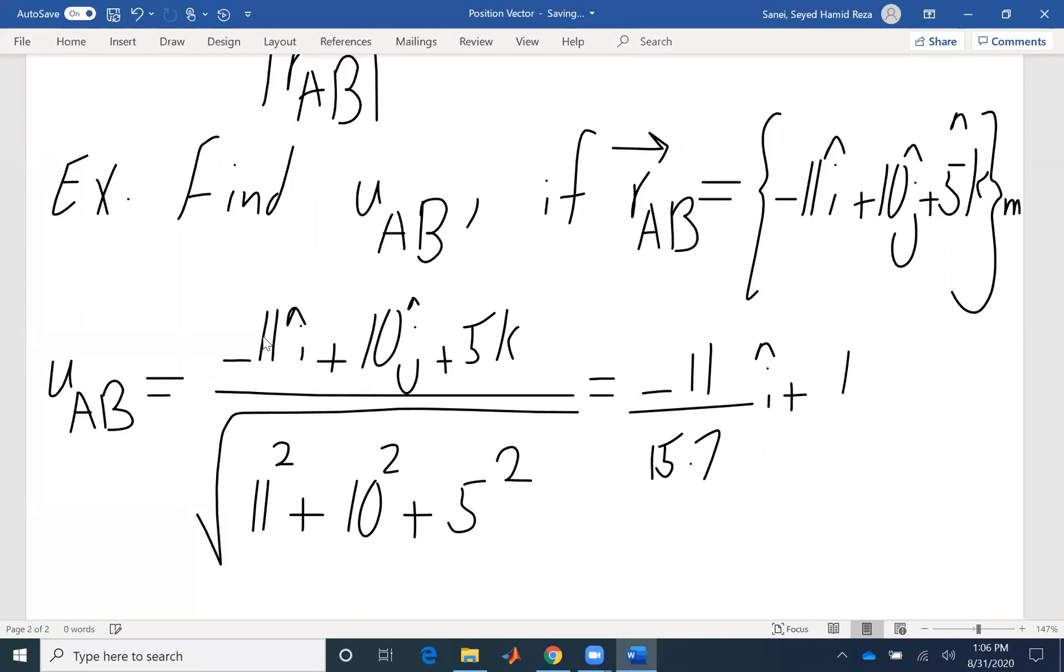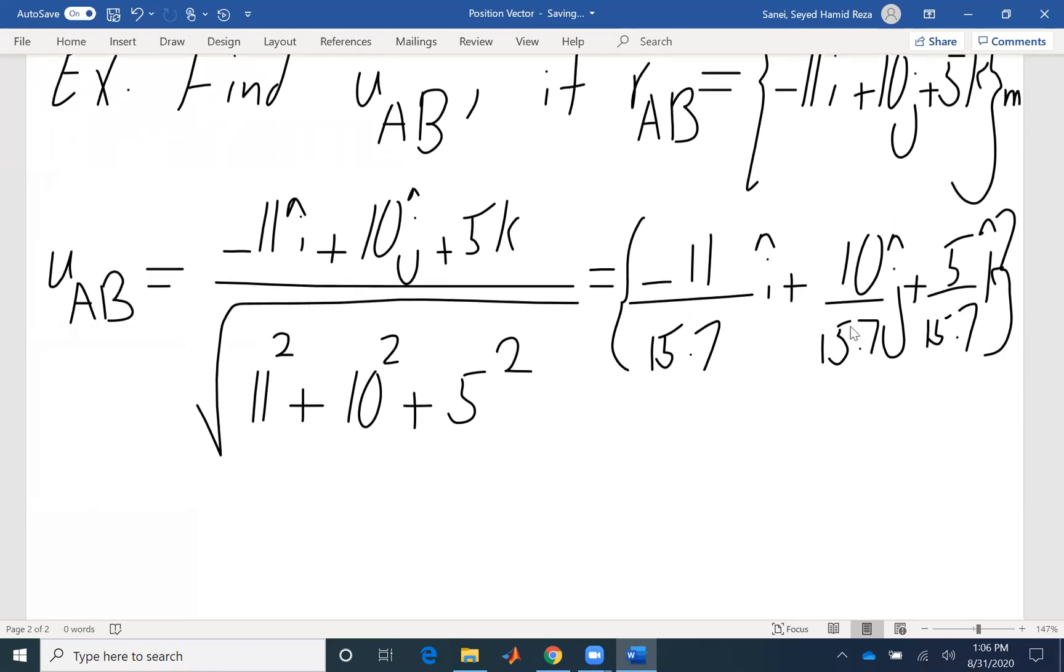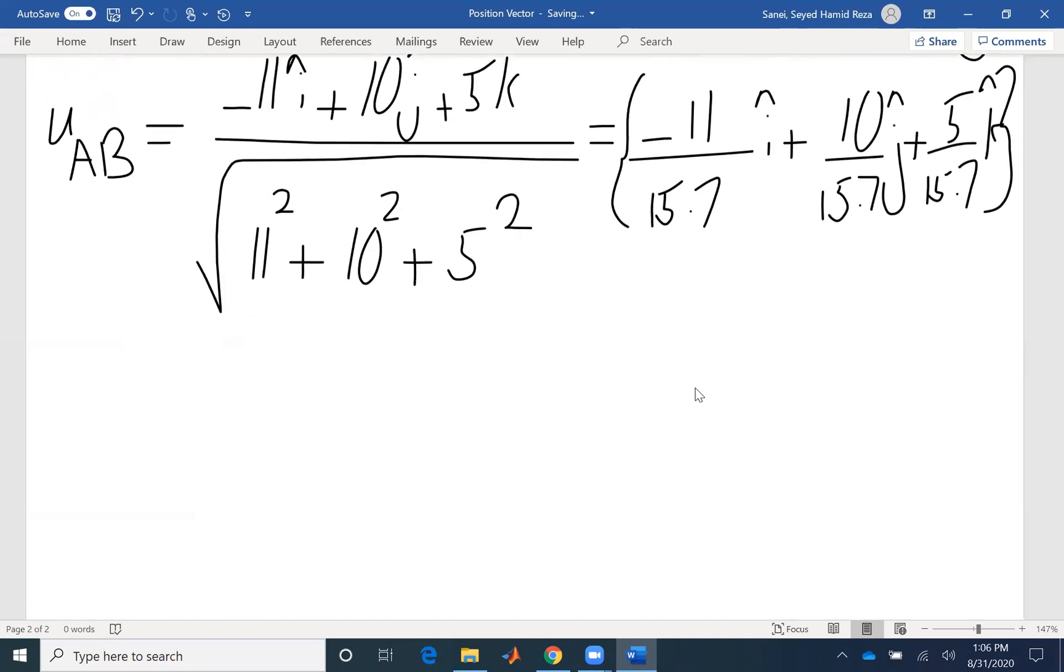So that means -11 over 15.7 i plus 10 over 15.7 j plus 5 over 15.7 k. So that's our unit vector. The magnitude of this vector is 1 and it gives us the direction. That's all it does. It doesn't have any magnitude.